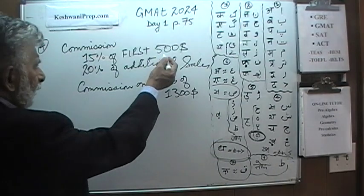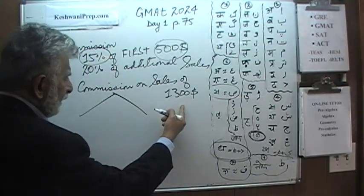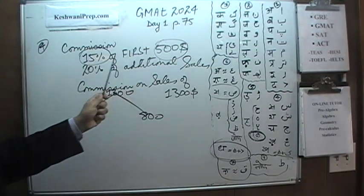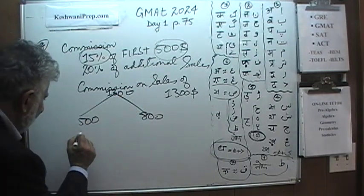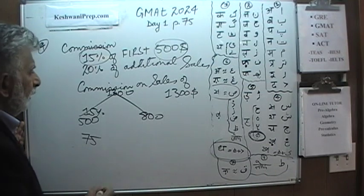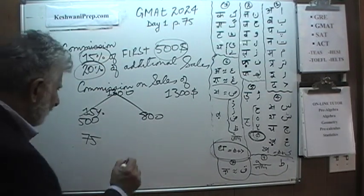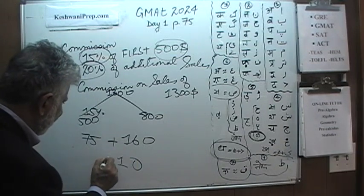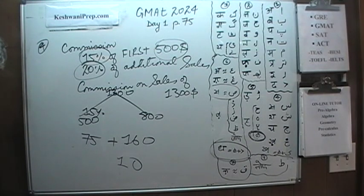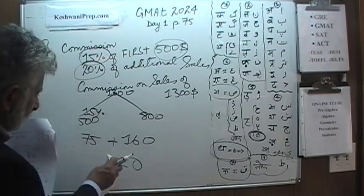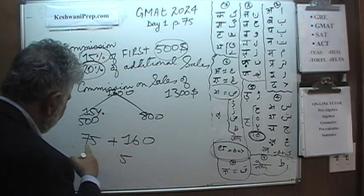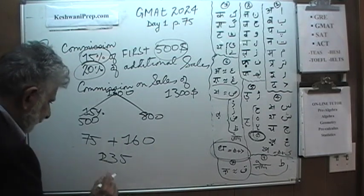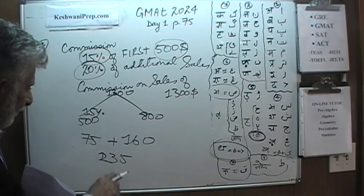The first $500 earns 15%. We divide $1,300 into $500 and $800. 15% of $500: 10% is $50, 5% is $25, so that's $75. For the remaining $800, we get 20%: 10% of $800 is $80, so 20% is $160. Total commission is $75 plus $160 equals $235. Of course it's $235 — this portion alone is $160, so it couldn't possibly be $135.